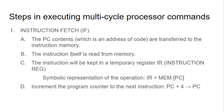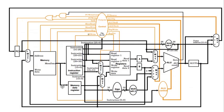The instruction itself is read from memory and stored in the IR — the instruction register. The symbolic representation is: IR equals the memory location specified by the PC. So in stage one, in the first cycle, we have read from memory into this register.